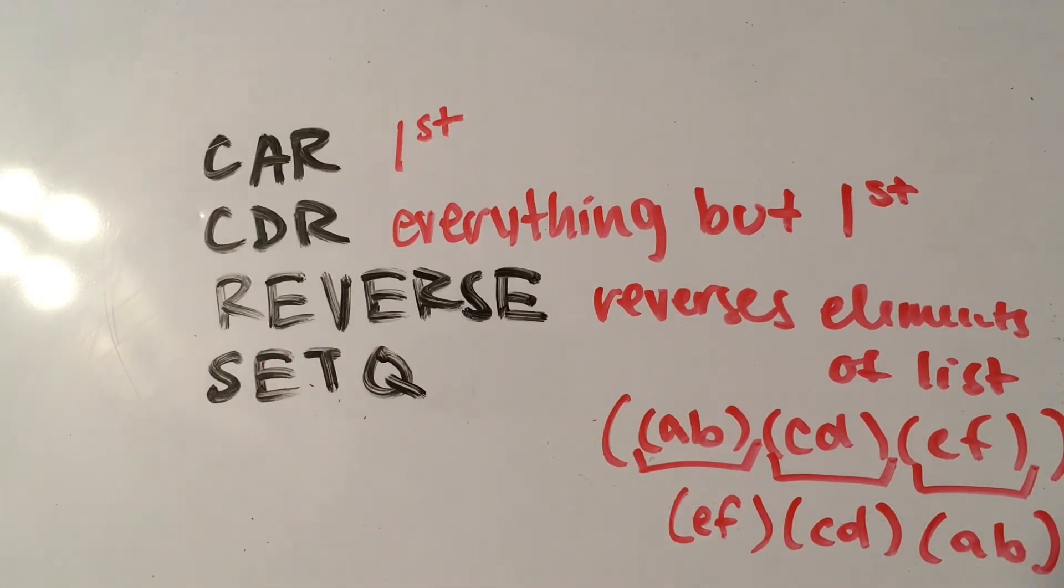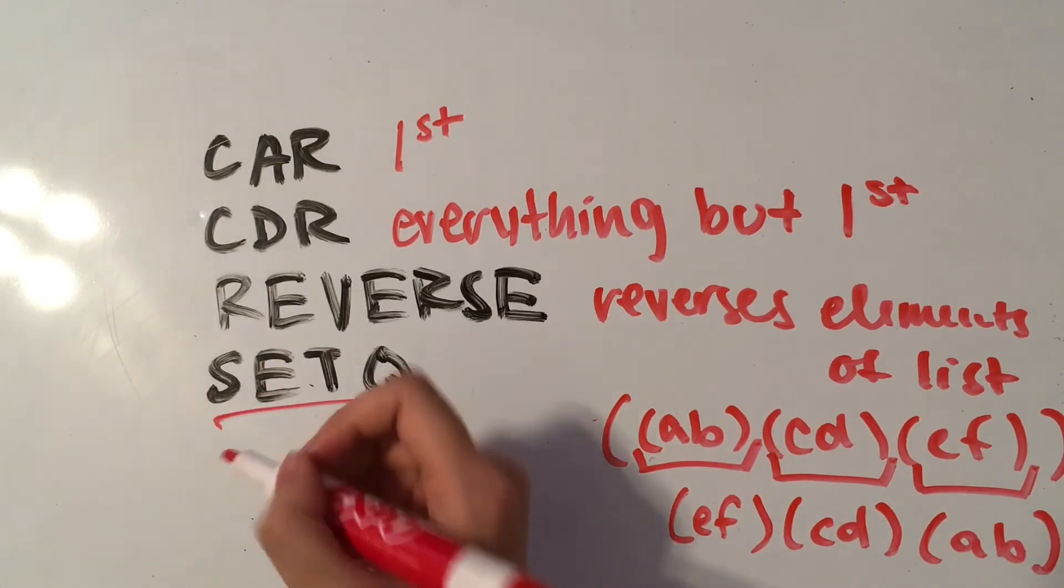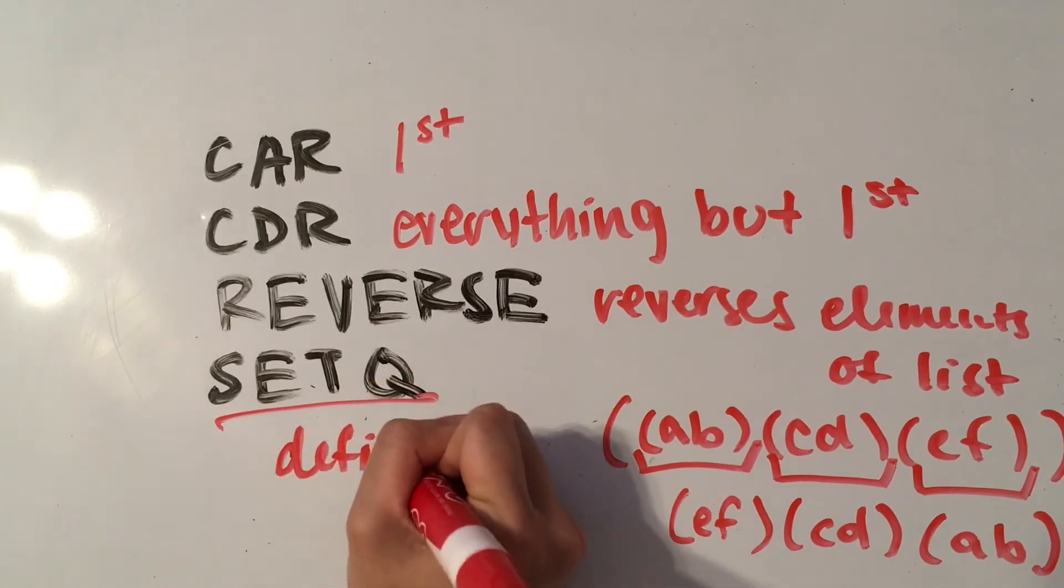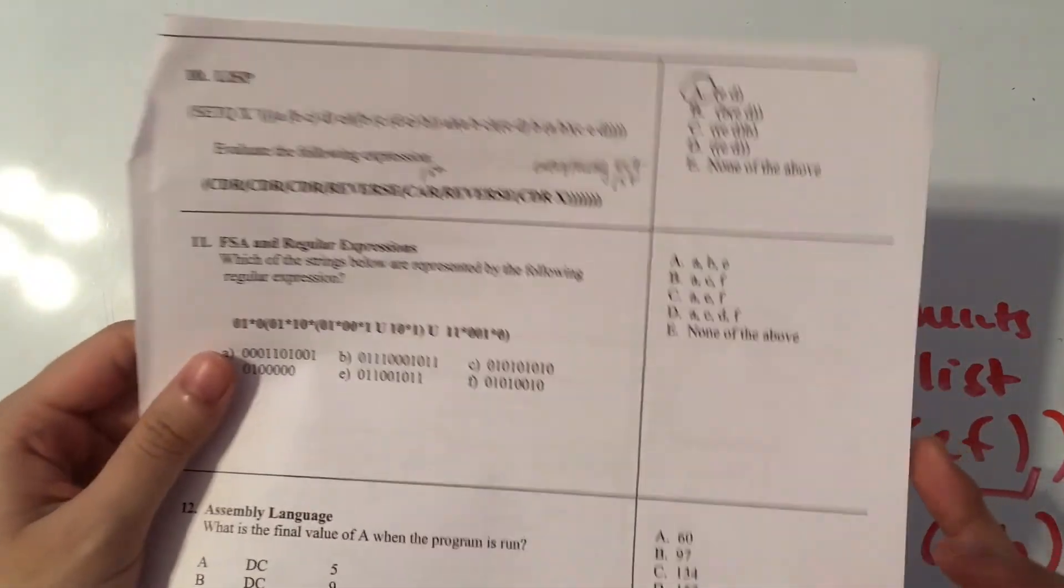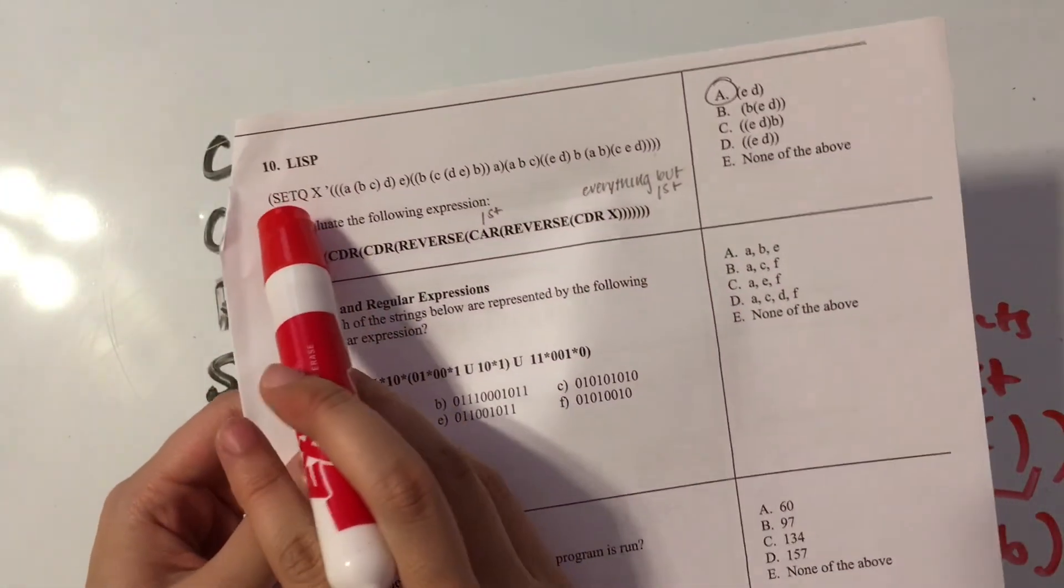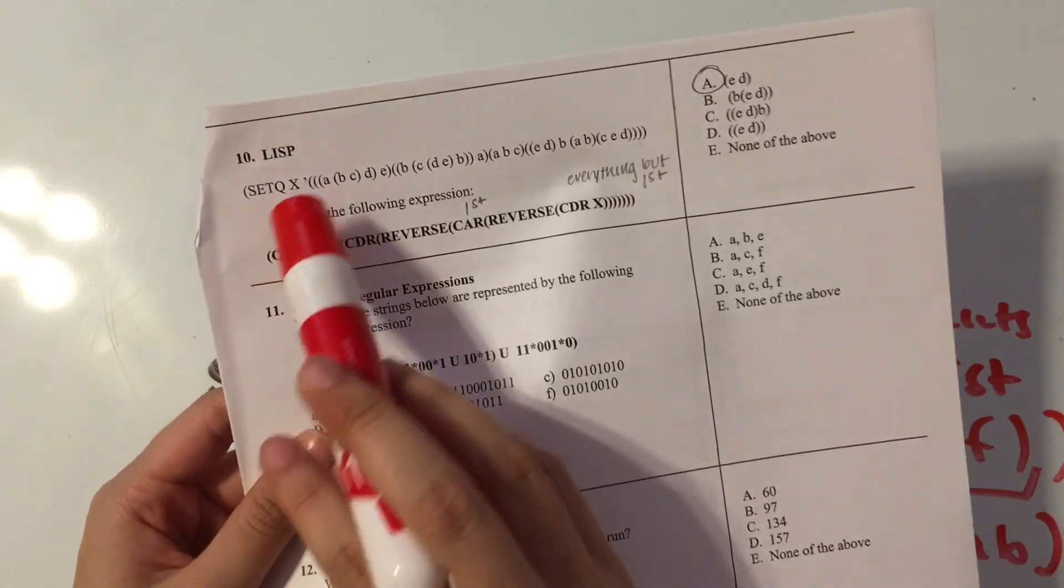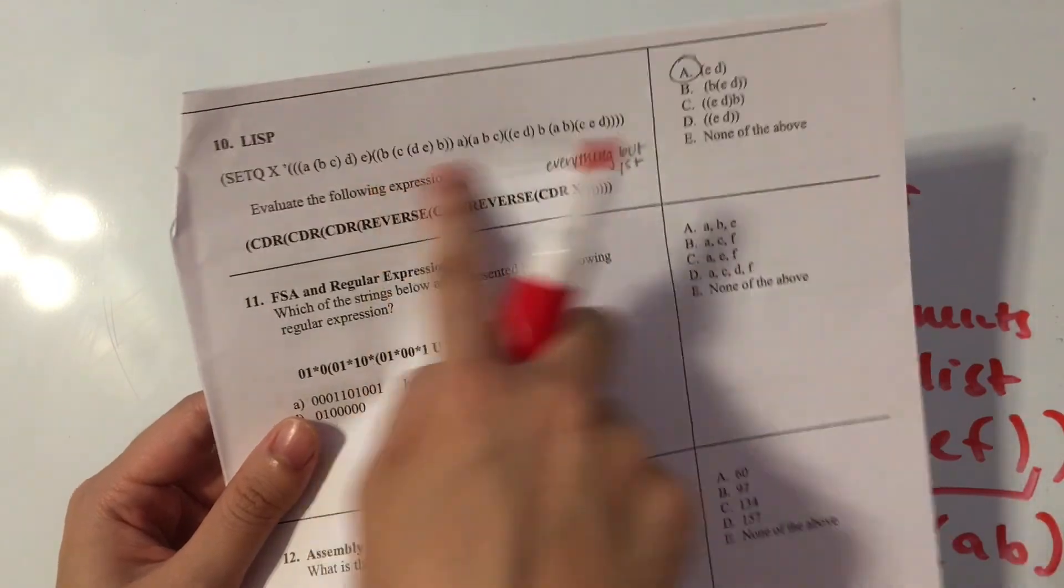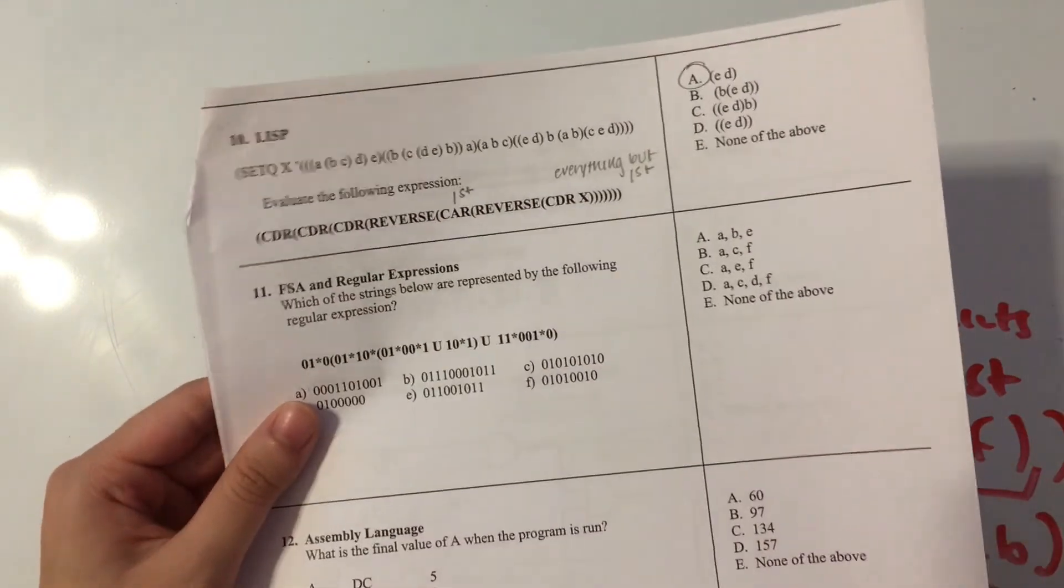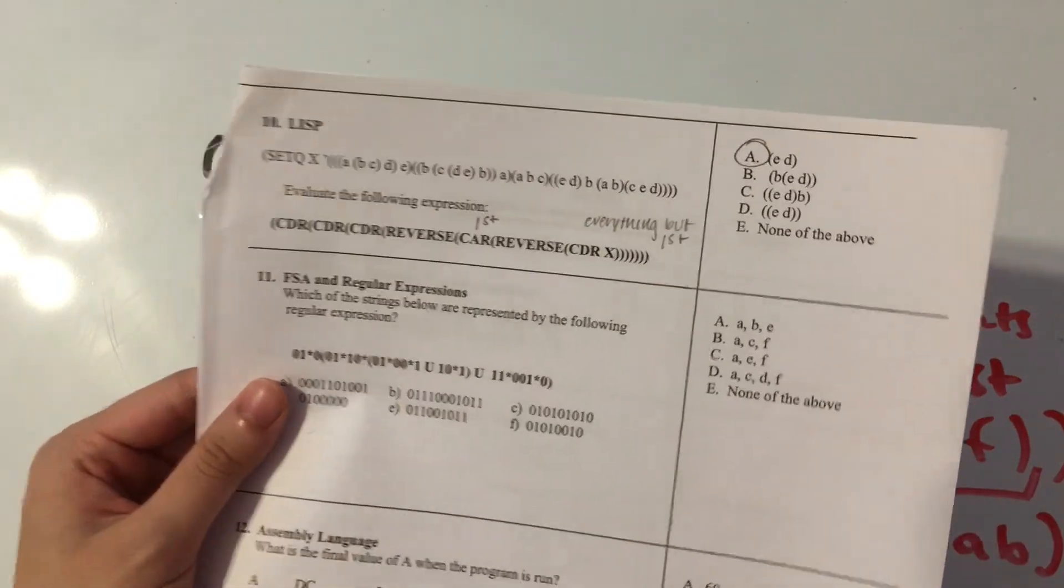So, that's how REVERSE works. And then SETQ basically just defines something for a variable. Like I have in this question, we have SETQ X. So, it's setting X to all of this. It's defining X to be this list of lists. And we're actually going to try to solve this problem in the next video.